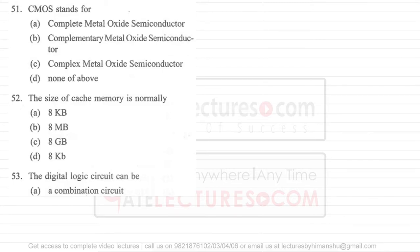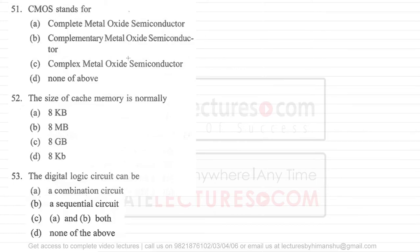In this video, let us look at questions 51 to 60. Question 51 says CMOS stands for — CMOS means complementary metal oxide semiconductor. It is not 'complete metal oxide semiconductor,' it is not 'complex metal oxide semiconductor' — it is complementary metal oxide semiconductor.